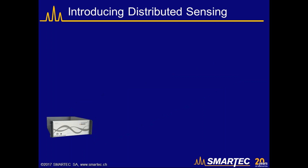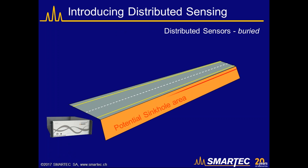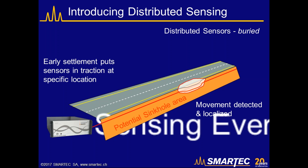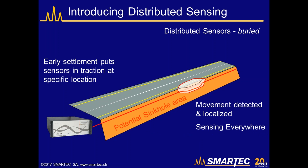This is where distributed sensing can bring an innovation. We can use a measurement system connected to a sensing cable that measures strain at every location along the cable itself. If settlement happens, the initial movements put the cable in traction and introduce a strain in the fiber, which is detected and localized. In this way we can sense everywhere and the system can pick up settlement at any location along its length.